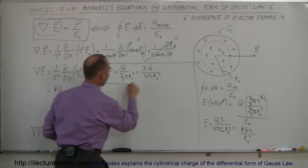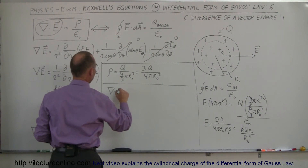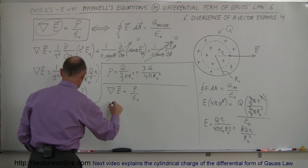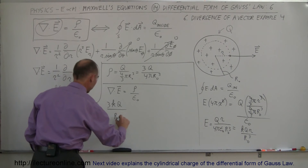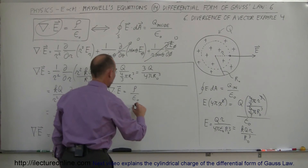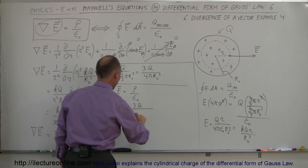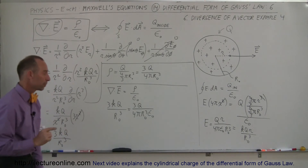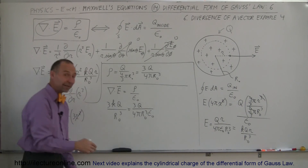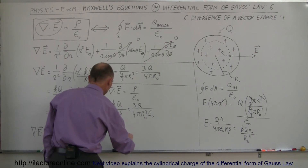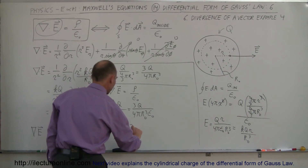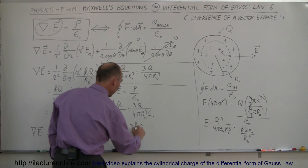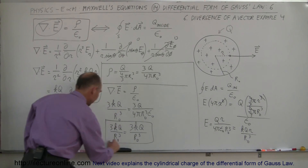Let's verify: we have 3KQ over R sub nought cubed on the left side, and on the right side we have 3Q divided by 4 pi R sub nought cubed, all over epsilon sub nought. Notice that 1 over 4 pi epsilon sub nought equals K, so the right side becomes 3KQ over R sub nought cubed. The left side equals the right side — the equation is verified.